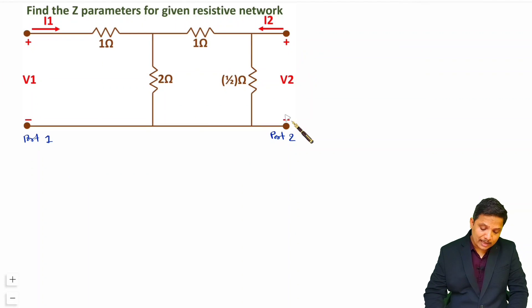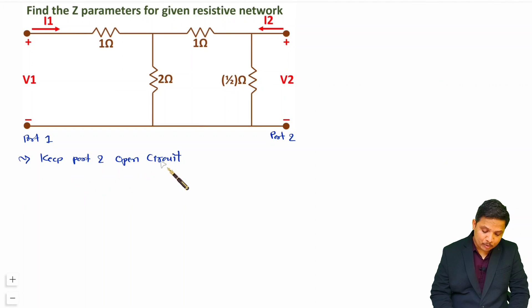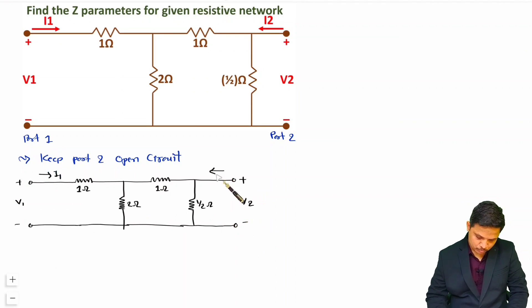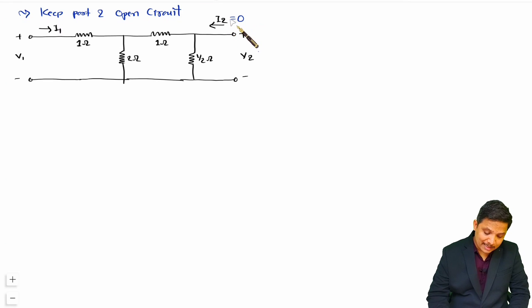If I keep port 2 as open circuit, then I2 will become 0, and then we will identify Z11 as well as Z21. I'll explain step by step how to do that. So let us have port 2 open circuited. I'll redraw this circuit first. Now I have redrawn the circuit with port 2 as open circuit, so I2 gets 0. First we can identify Z11 directly, that is V1 divided by I1.